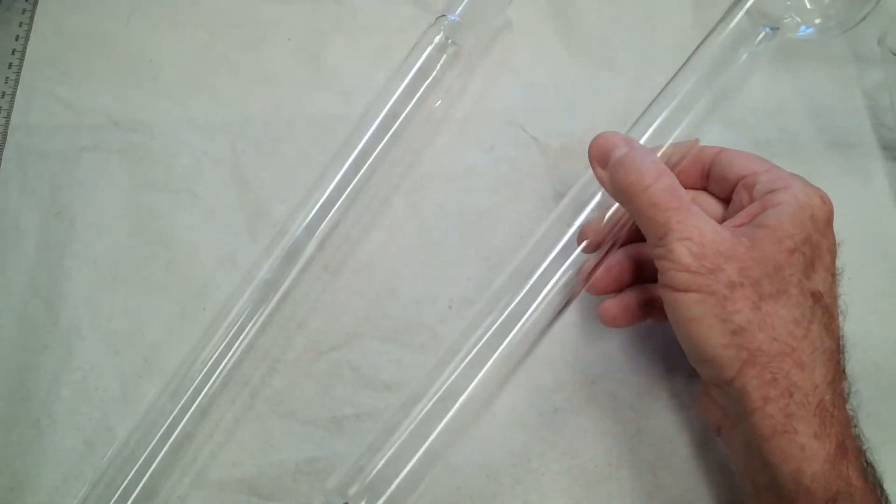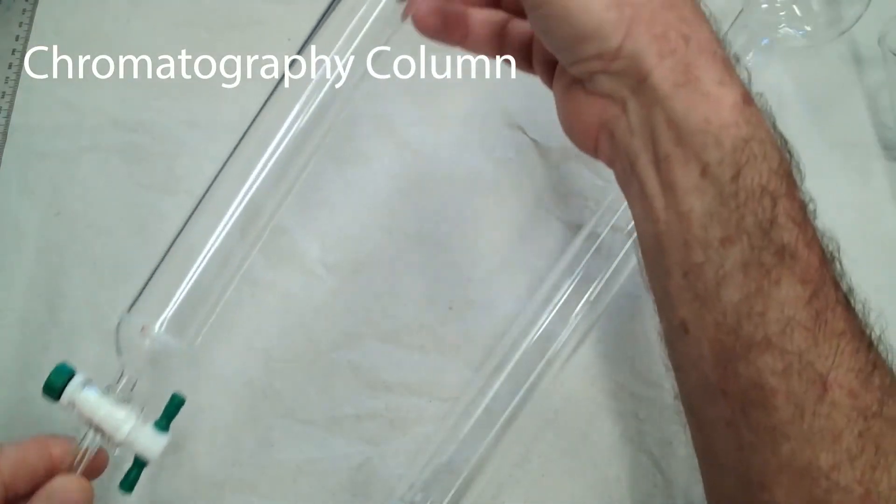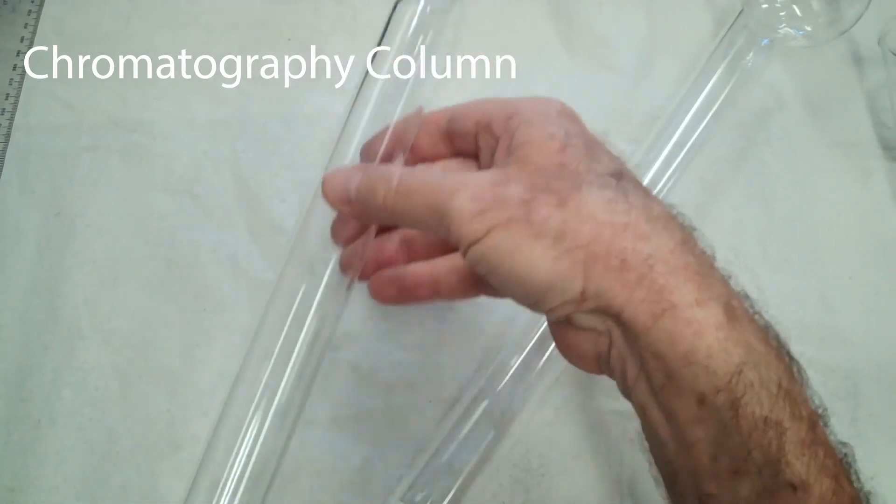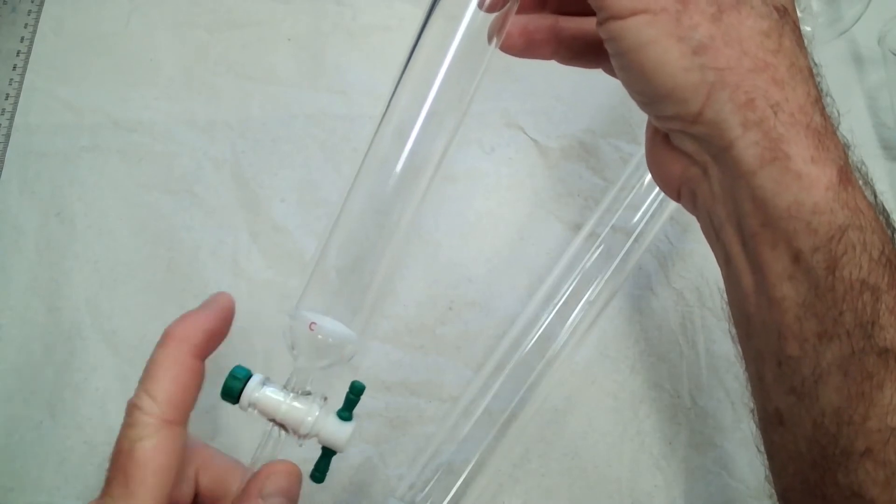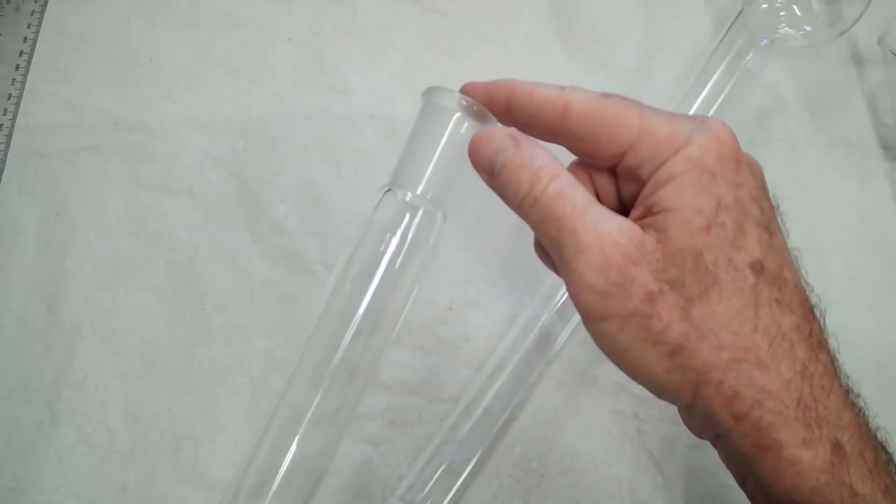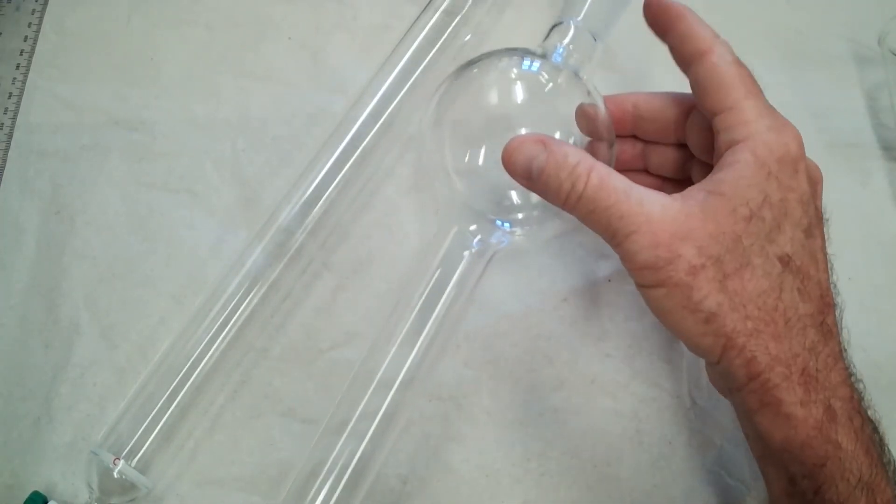Another use of fritted discs is in a chromatography column. Let's try to show this one here, where you have a Teflon stopcock, you have the filter disc and tube and the top connection. And this is the same, a filter column with a reservoir on top.